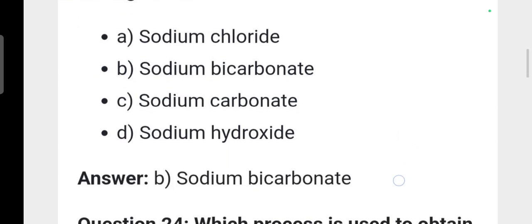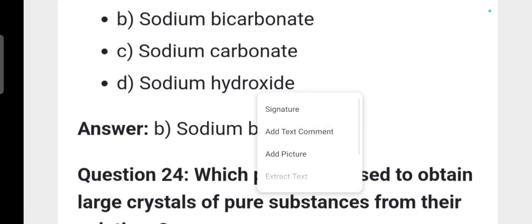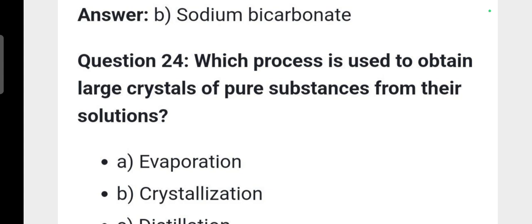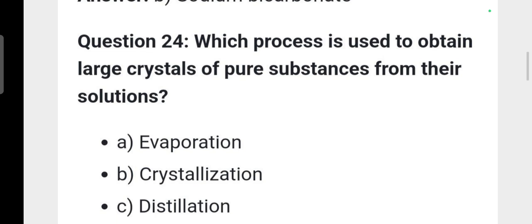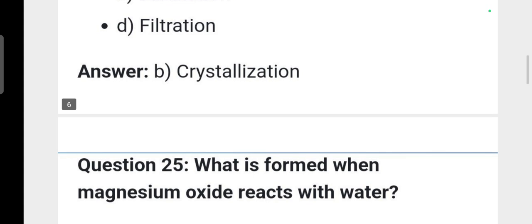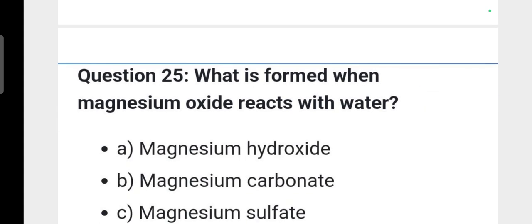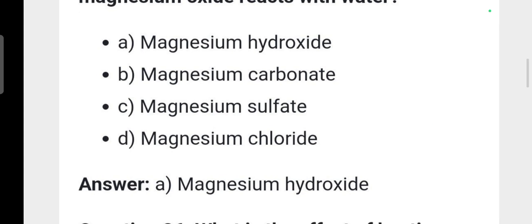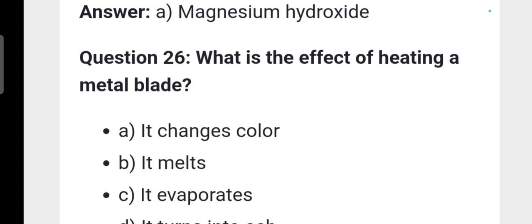Which process is used to obtain large crystals of pure substances from their solution? Crystallization. What is formed when magnesium oxide reacts with water? Magnesium hydroxide. What is the effect of heating a metal blade? It expands.